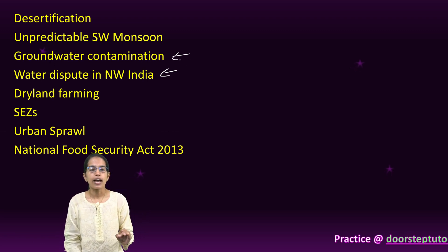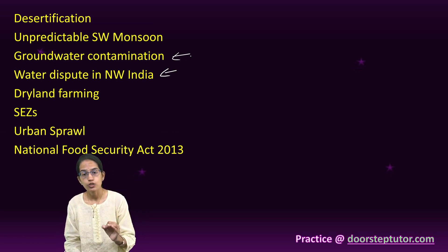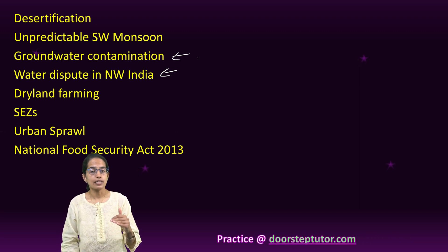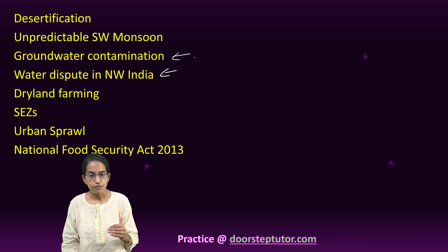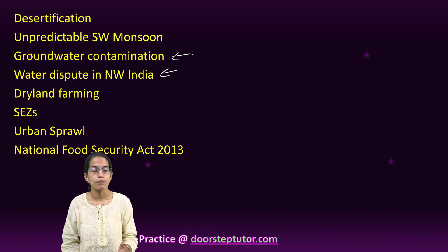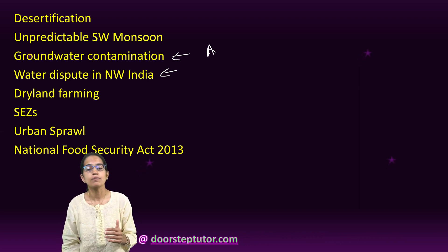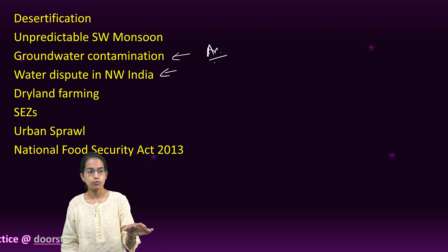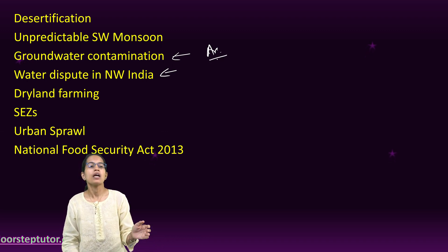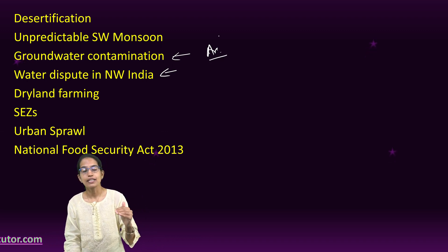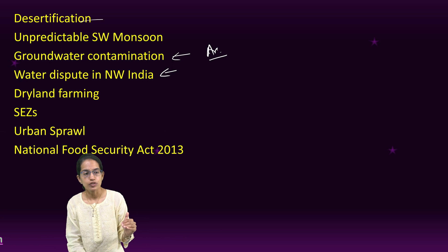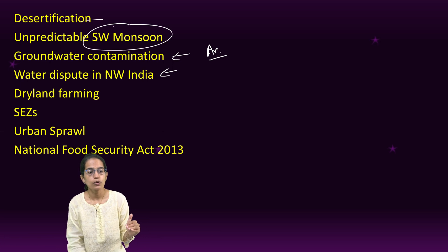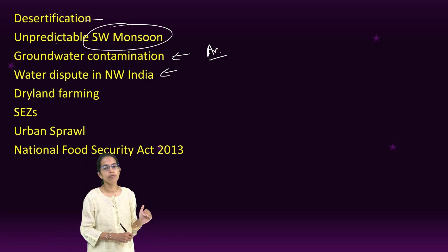Groundwater contaminations — grey zones, dark zones — again involve contemporary happenings. Arsenic pollution is also an important topic. Unpredictability in the southwest monsoon is another area: when you read conventional books you study southwest monsoon, but its unpredictable behavior in recent years is key.